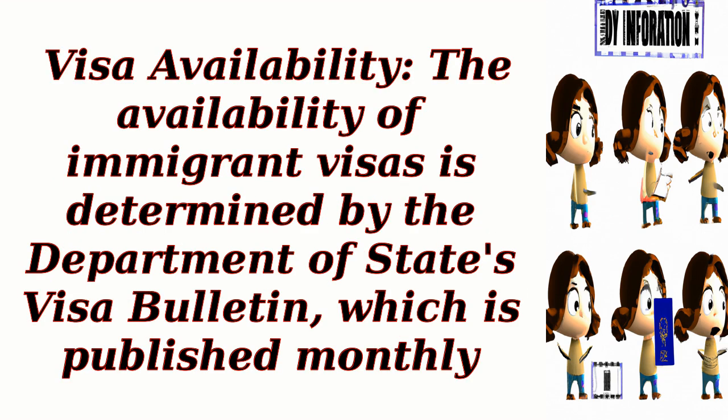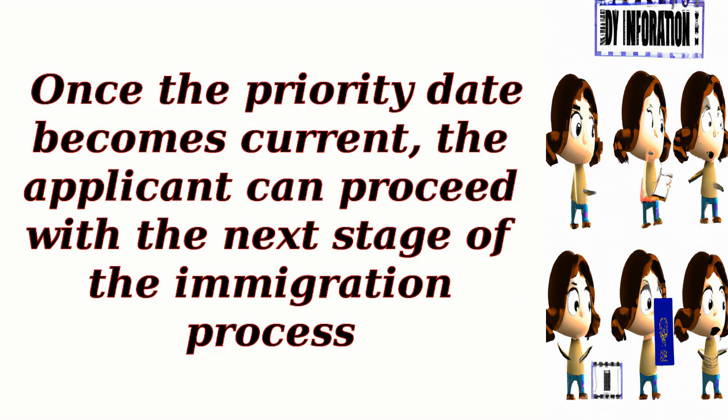Visa availability: the availability of immigrant visas is determined by the Department of State's Visa Bulletin, which is published monthly. Once the priority date becomes current, the applicant can proceed with the next stage of the immigration process.